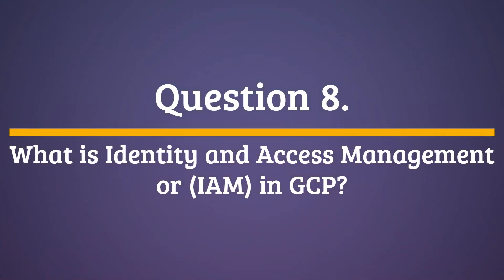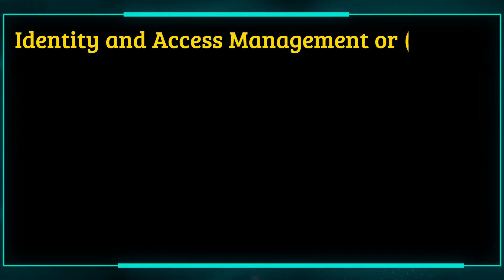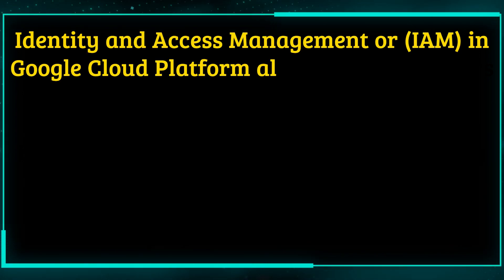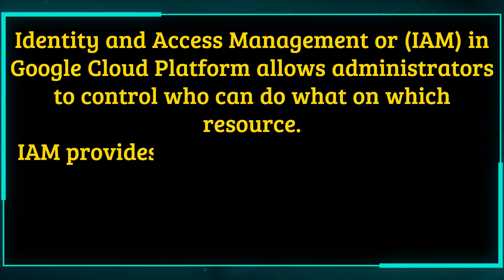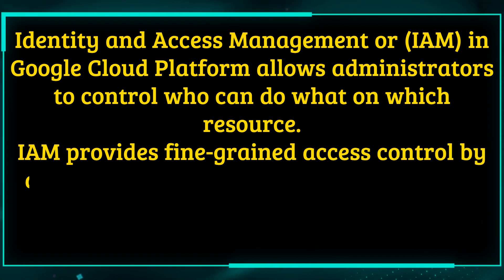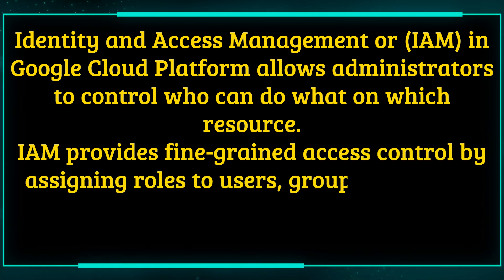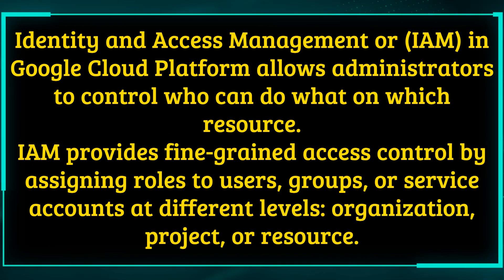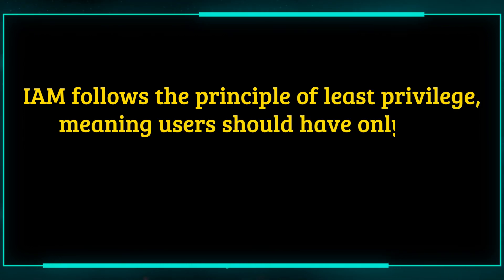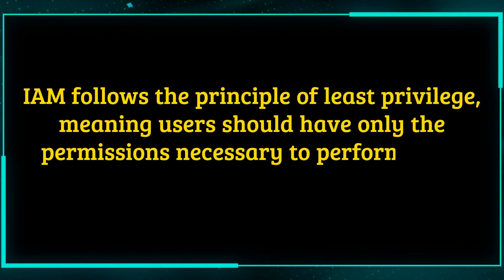Question 8. What is Identity and Access Management, or IAM, in GCP? IAM in Google Cloud Platform allows administrators to control who can do what on which resource. IAM provides fine-grained access control by assigning roles to users, groups, or service accounts at different levels — organization, project, or resource. IAM follows the principle of least privilege, meaning users should have only the permissions necessary to perform their tasks.